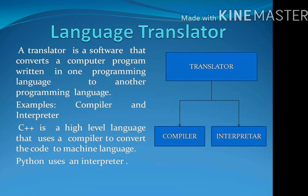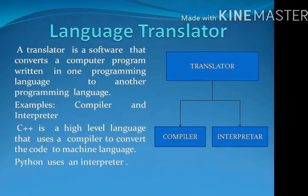Examples of translators include Compiler and Interpreter. C++ is a high-level language that uses a compiler to convert the code to machine language. Python uses an interpreter.